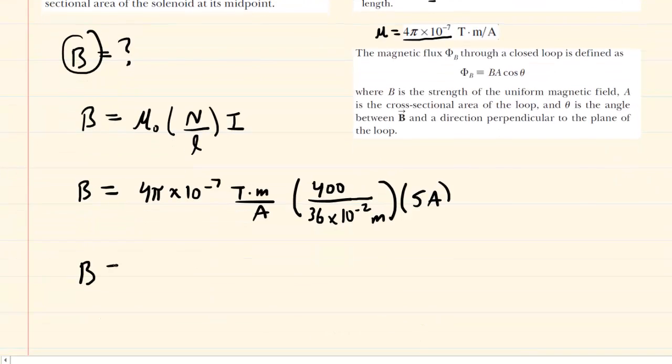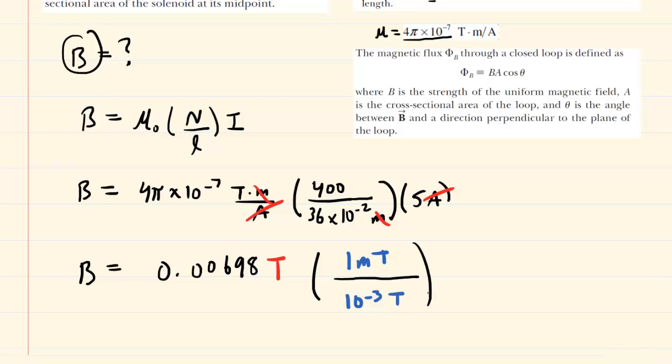We can punch this into our calculators, and the magnetic field strength turns out to be 0.00698, approximately. This is going to be tesla, because the amps cancel out, as do the meters. So you're left with tesla. Your homework system might require you to convert this into millitesla. If that is the case, then you would multiply by a conversion factor. 1 millitesla is 10 to the minus 3 tesla. So if you take this value and multiply by 1 divided by 10 to the negative 3, you would get 6.98 millitesla. This is the correct answer for part A.